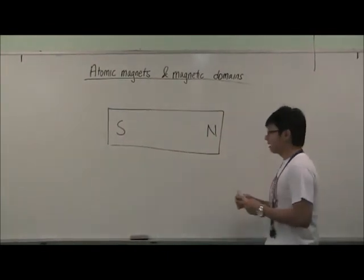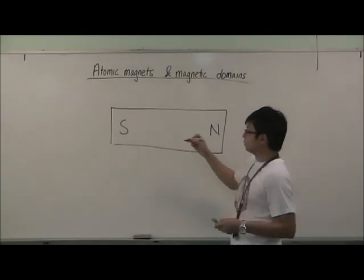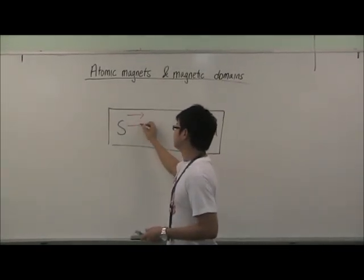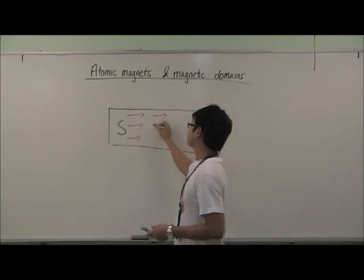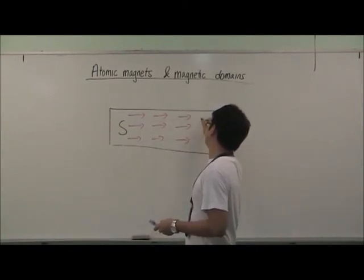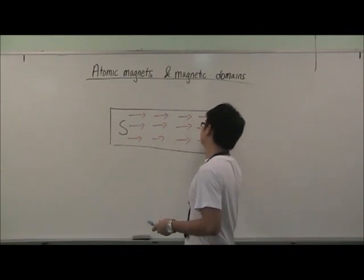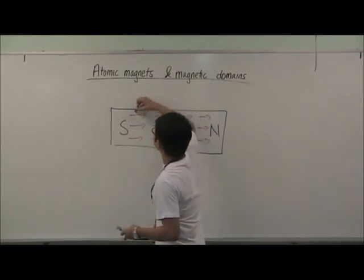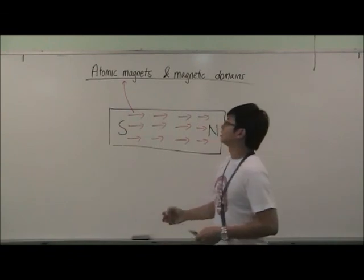If I simplify it, basically you will see a lot of smaller magnets inside a magnet. And these smaller magnets are called the atomic magnets.